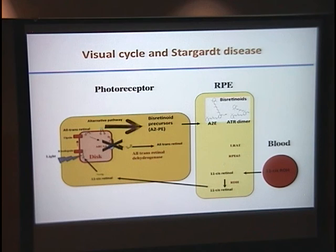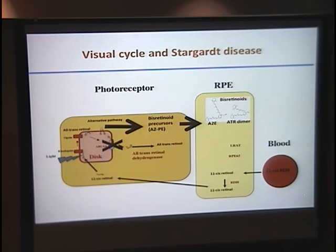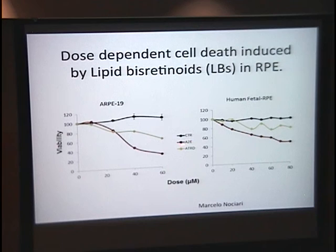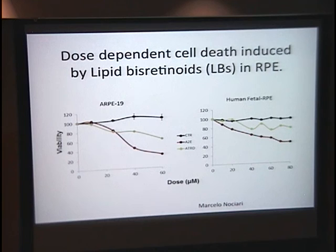In Stargardt's disease, ABCA4 is mutated, so this alternative pathway is enhanced enormously, leading to enormous production of bisretinoids. The accumulation of these bisretinoids is quite toxic. In experiments, we synthesized A2E or the all-trans retinal dimer and incorporated them into cells at concentrations resulting in intracellular levels similar to those of an aging eye. We can see a clear effect on the viability of both RPE cell lines and human fetal RPE cells.